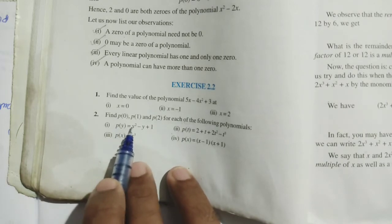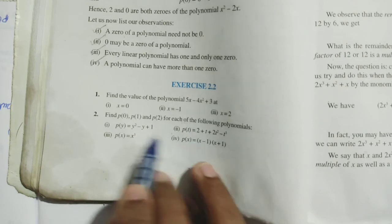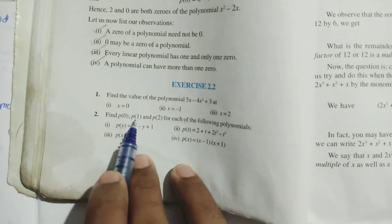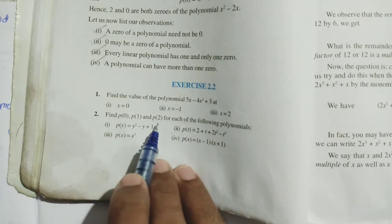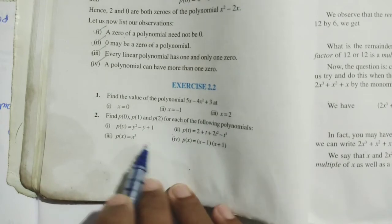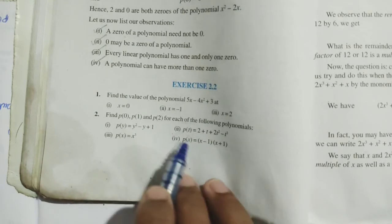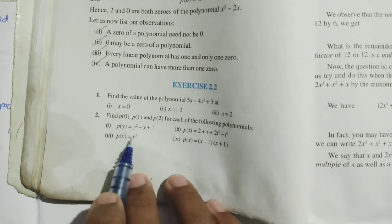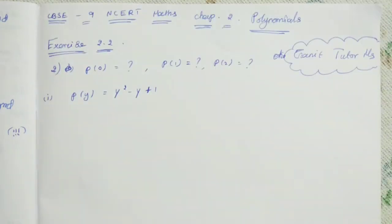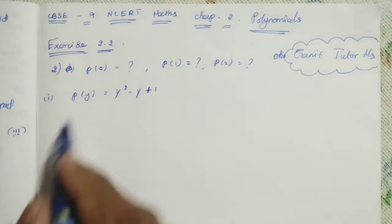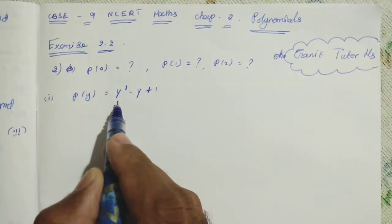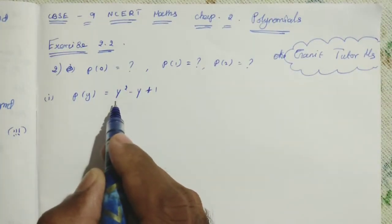The same way, we should find the value for P of 0, P of 1, and P of 2 for each of the following four polynomials. So let me solve the problem now. First polynomial: P of y is equal to y squared minus y plus 1.